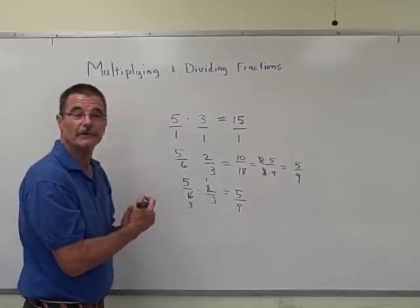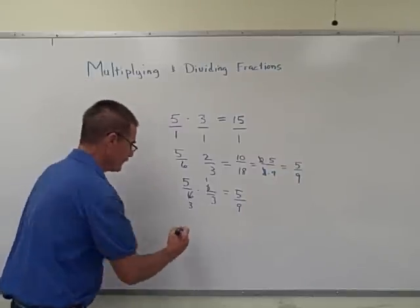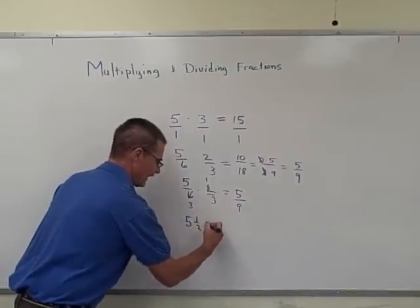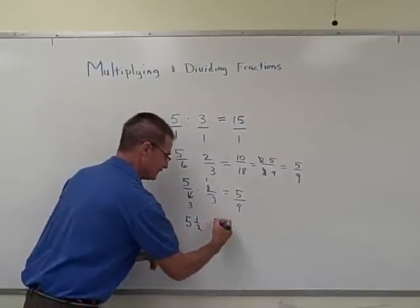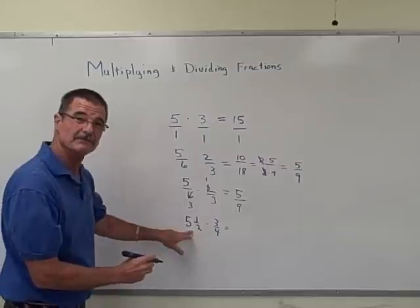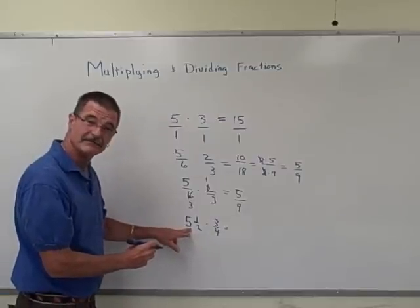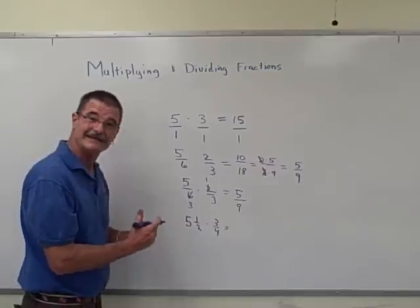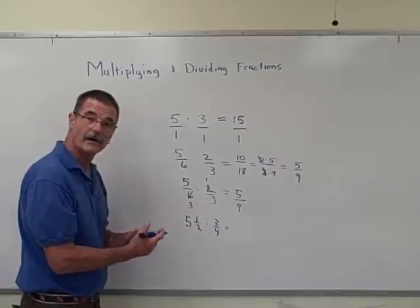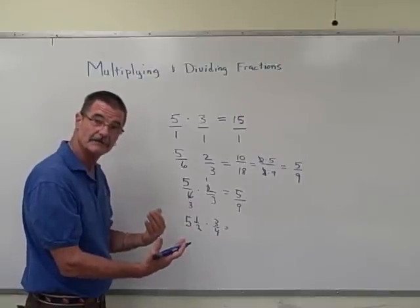Okay. Let's take another number. Let's take a mixed number. Let's say that we had the number 5 and 1 half and we wanted to multiply it times some other fraction, 3 quarters. Well, this mixed number 5 and 1 half gives us a little bit of a problem. We really need to take this into another form. This mixed number, since it has a whole part and a fraction part, is called a mixed number.